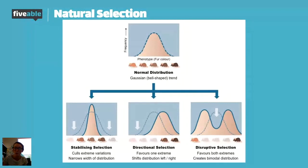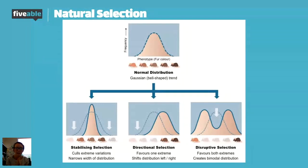There are three different possible outcomes for this population based on three different environmental changes. All the way on the left is stabilizing selection. Think of it this way — if you are a stable person, you take the middle ground. So for stabilizing selection, we see a push towards that middle, medium blend of colors as the favored trait. This may happen if the environment becomes a lighter brown dirt or wood chip, allowing those middle-brown mice a better chance of surviving against predators.